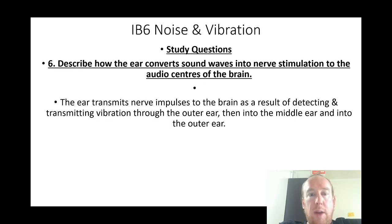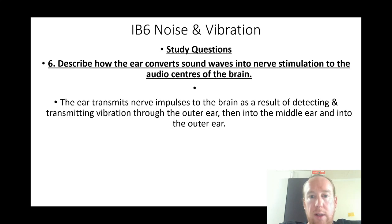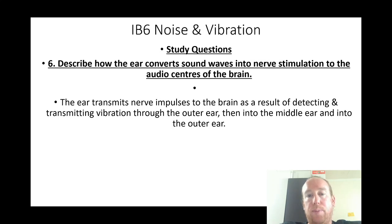Describe how the ear converts sound waves into nerve stimulation to the audio centres of the brain: the ear transmits nerve impulses to the brain as a result of detecting and transmitting vibration through the outer ear, then the middle ear, into the inner ear.